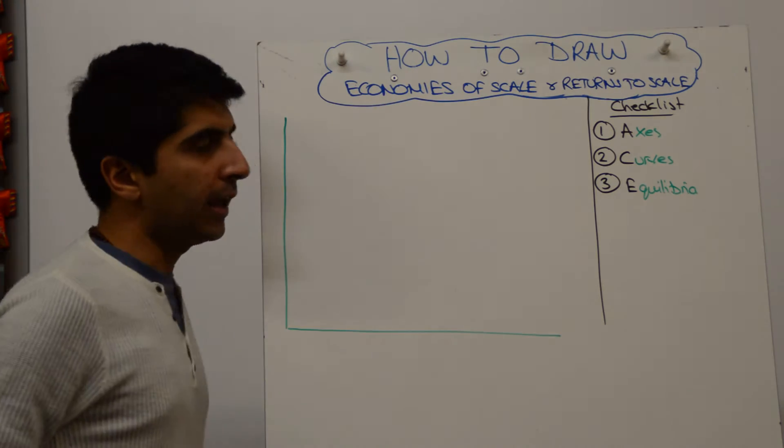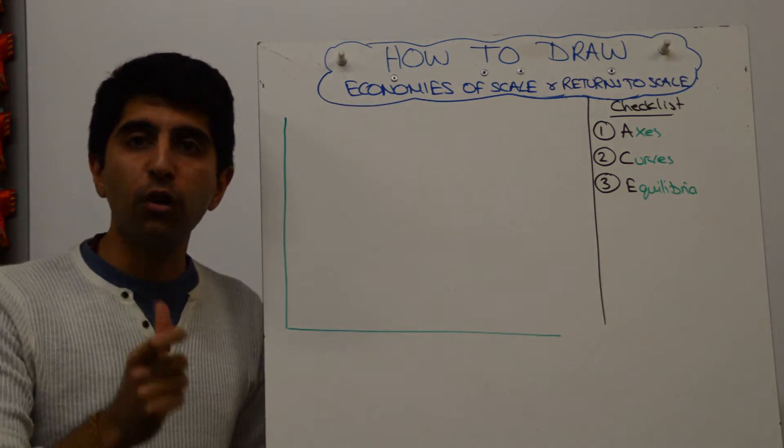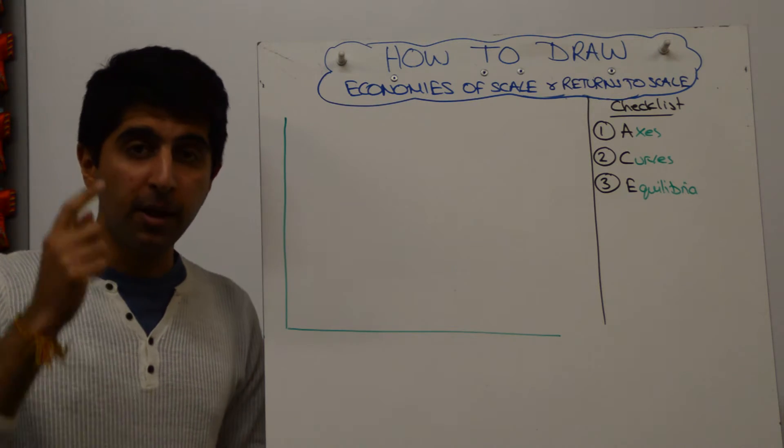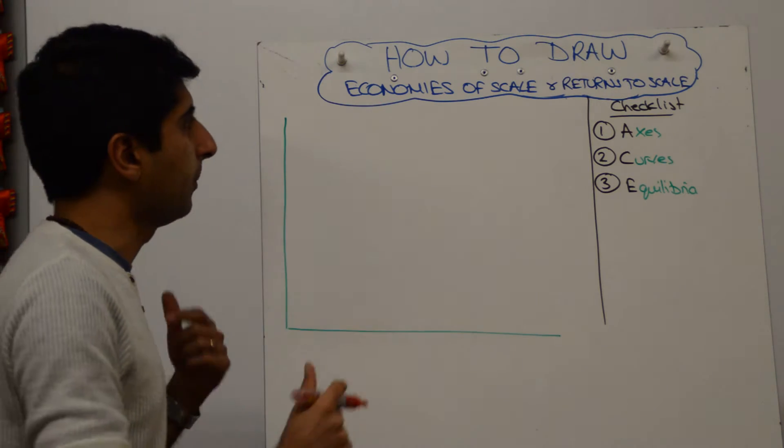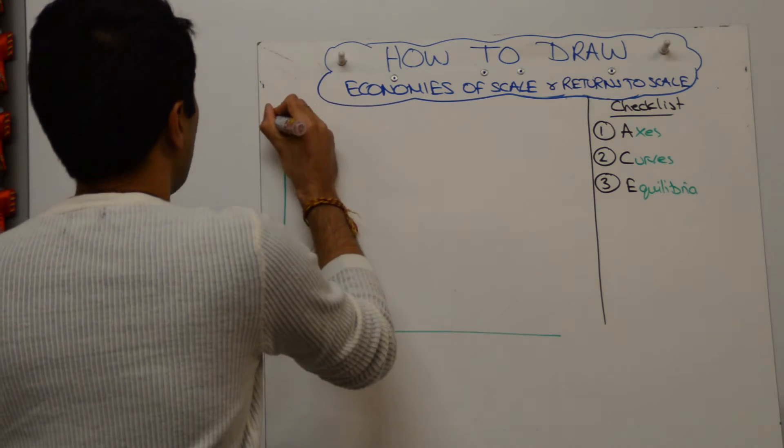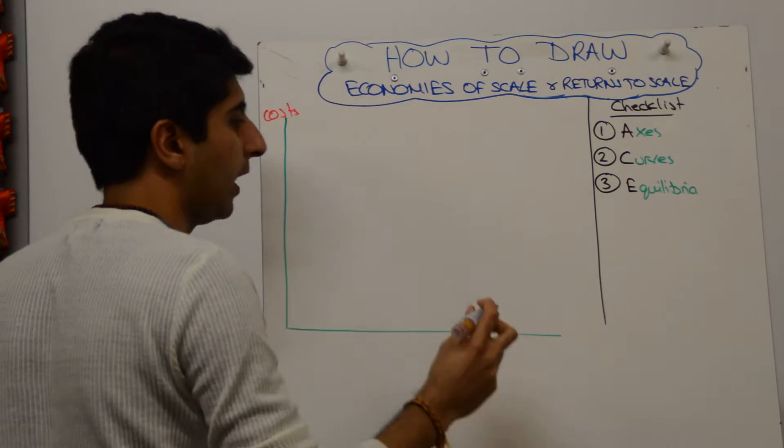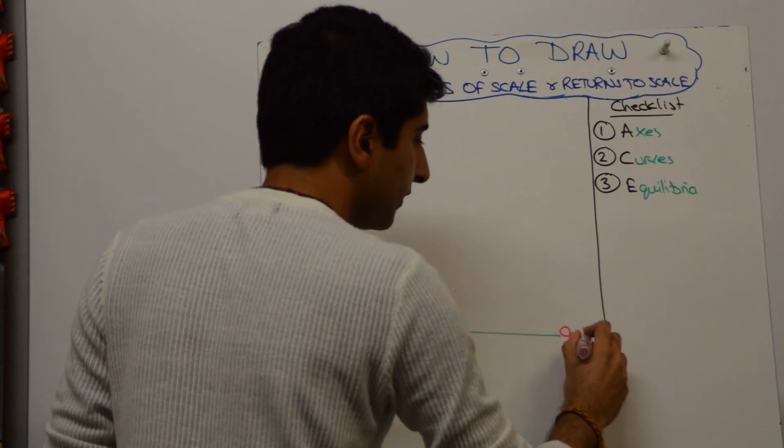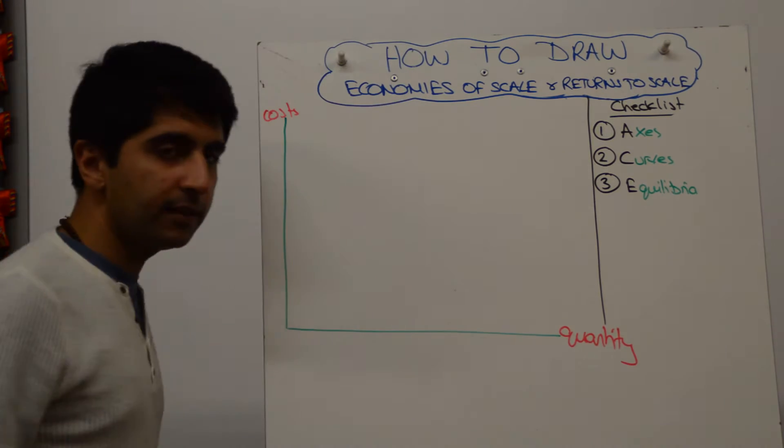To show economies of scale and returns to scale, we need the long-run average cost diagram. That's at the core of this diagram. We're working with costs, so it's costs on the y-axis. Label that first, and quantity or output on the x-axis.